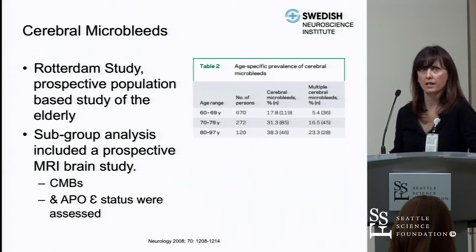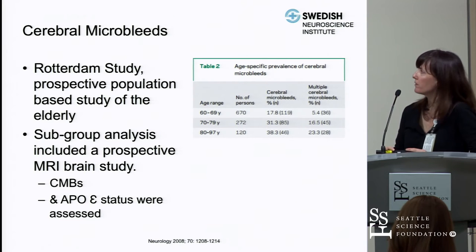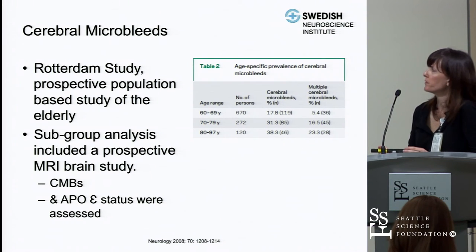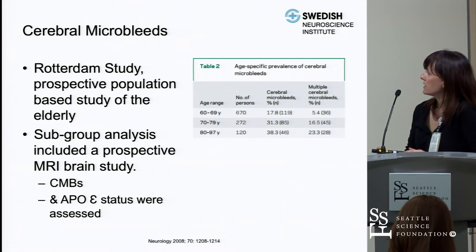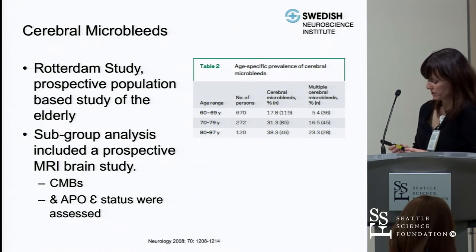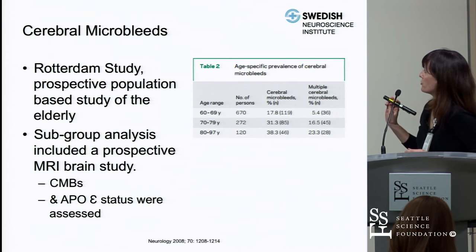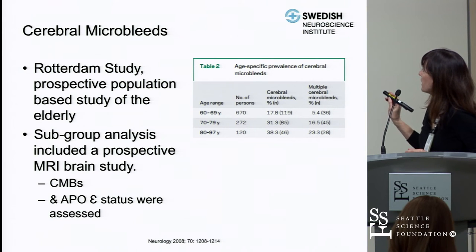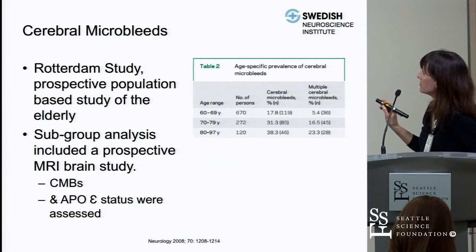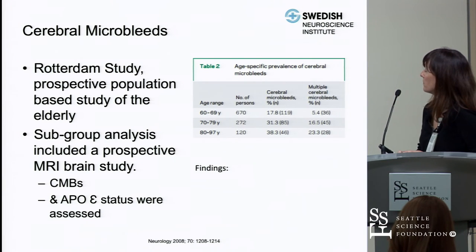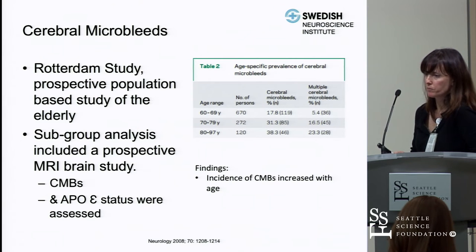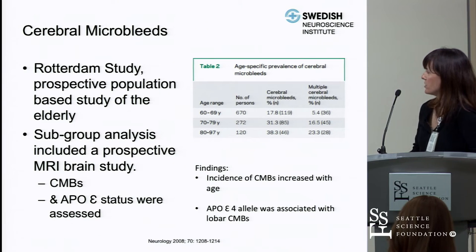The Rotterdam study, a prospective population-based study of the elderly with an MRI subgroup analysis, found that a large proportion of the elderly population did have cerebral microbleeds. Multiple cerebral microbleeds were seen in up to 23% in the age range of 80 to 97 years old. Incidence increases with age, and the ApoE4 allele was associated with lobar microbleeds specifically.